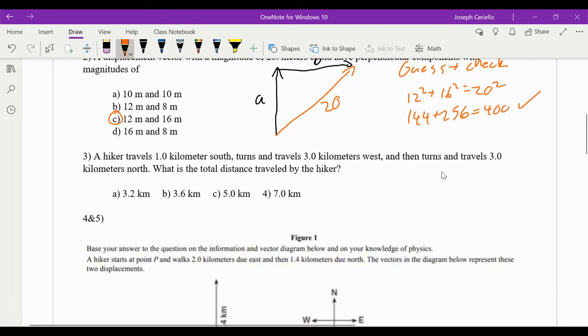The last one here is actually way easier than you might think. So just read it carefully. A hiker walks one kilometer south, turns, and then travels three kilometers west, and then turns and travels three kilometers north. What is the total distance traveled by the hiker? I saw a lot of people drawing this out and then trying to do some trig, but realize that it's just looking for the distance. So it just wants the total length of the path. So that's one kilometer plus three kilometers plus three kilometers. Ends up being seven kilometers.